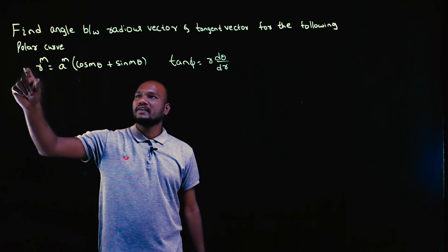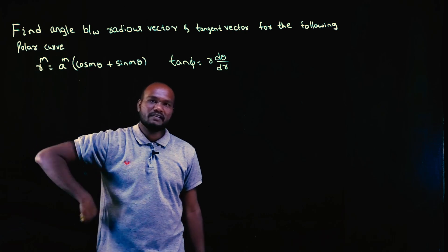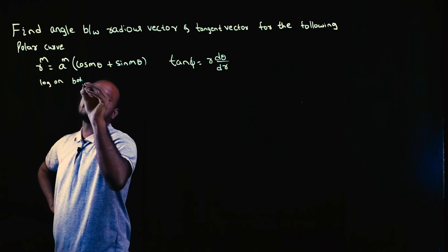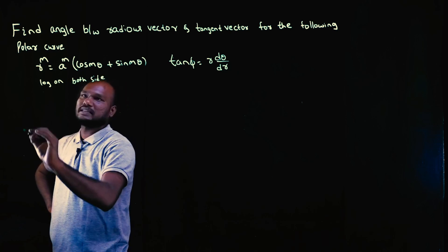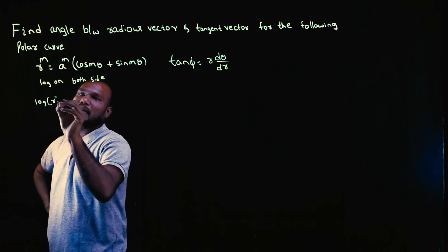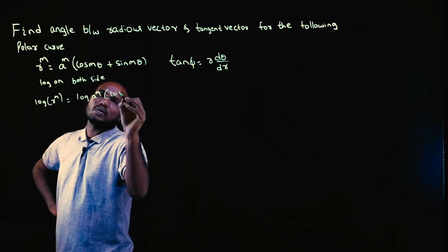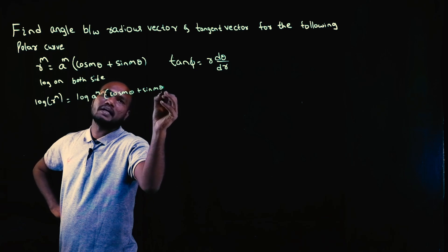Whenever you have r to the power m instead of just r directly, just take log on both sides. So log r^m equals log a^m times (cos m theta plus sin m theta).